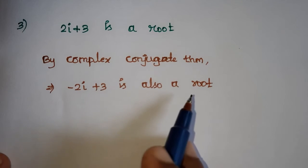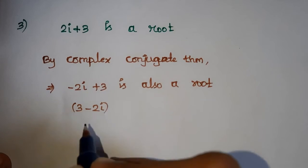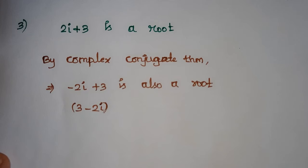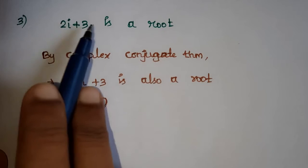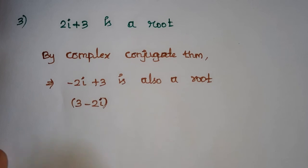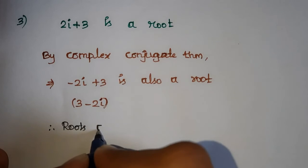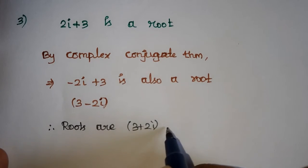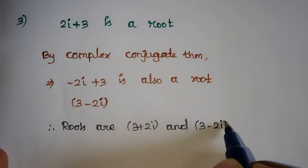3 minus 2i is a root. The roots are 3 plus 2i and 3 minus 2i.